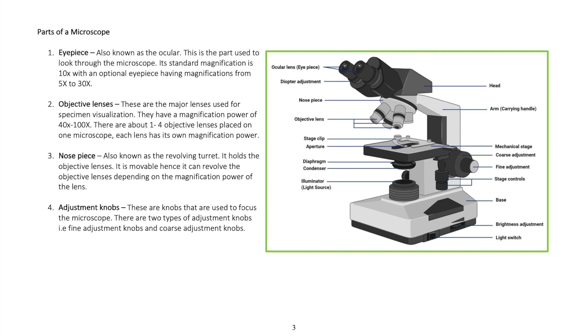The eyepiece, also known as the ocular, is the part used to look through the microscope. Its standard magnification is 10 times, with an optional eyepiece having magnifications from 5 times to 30 times.